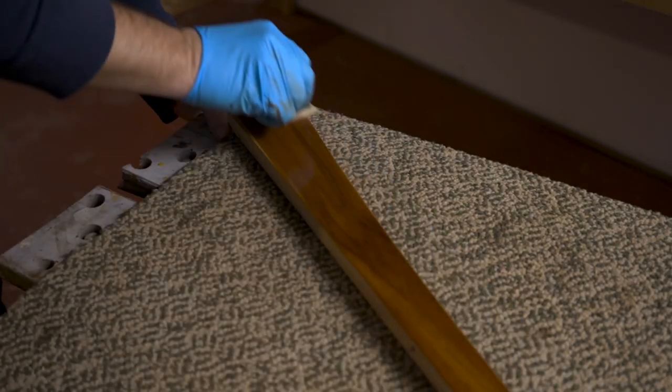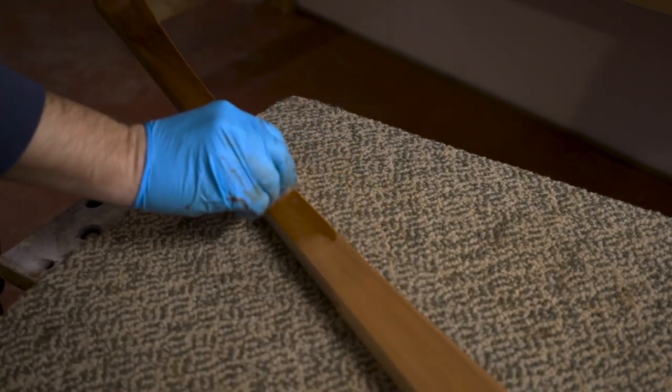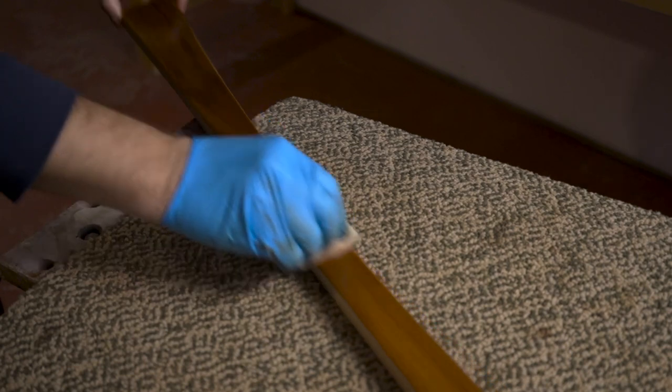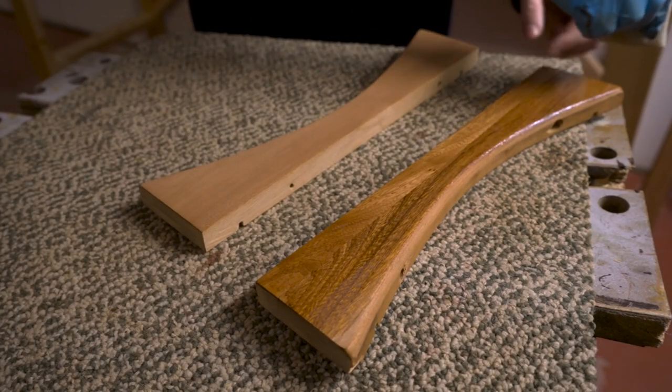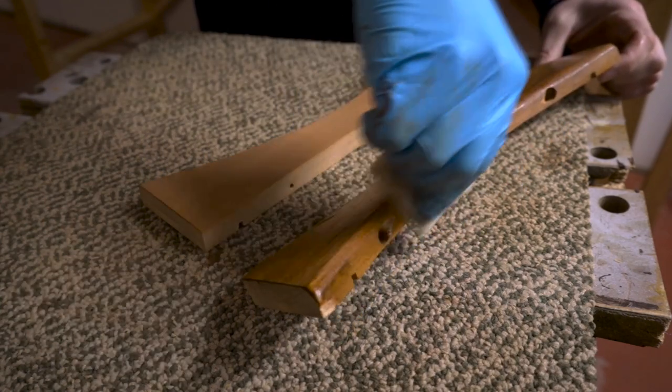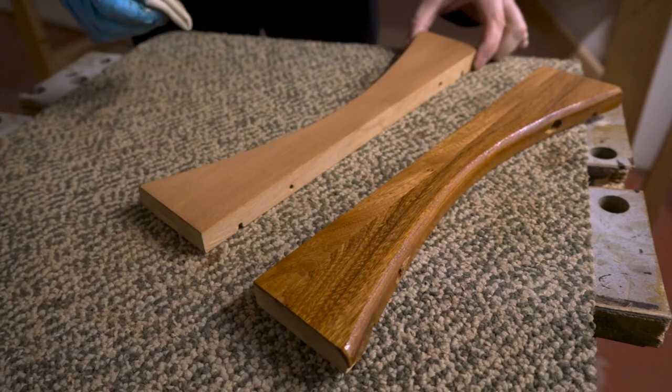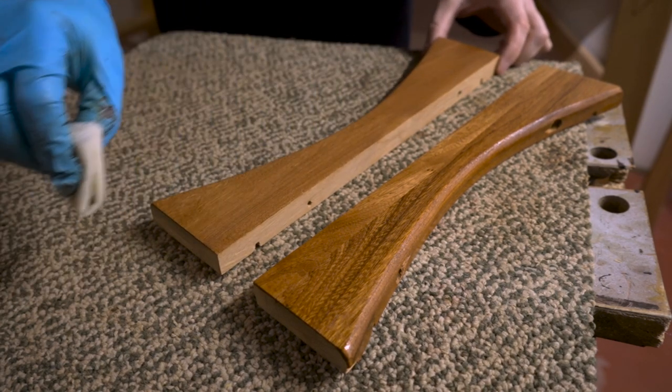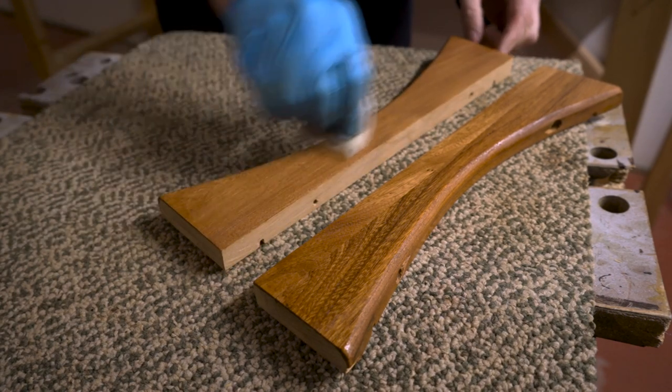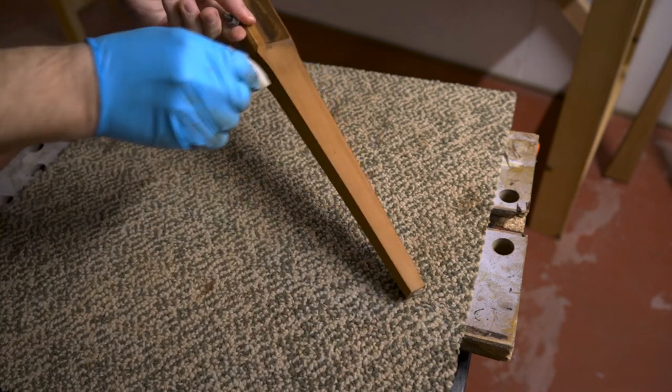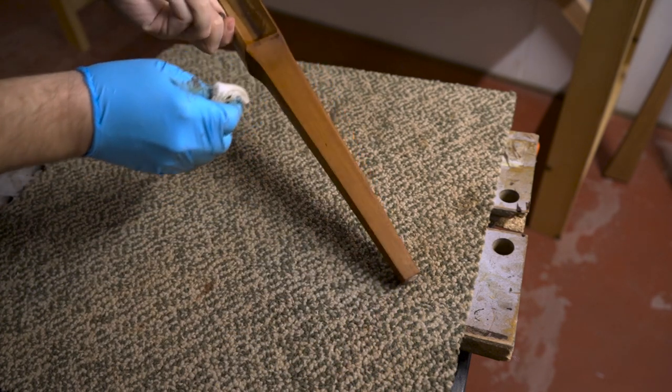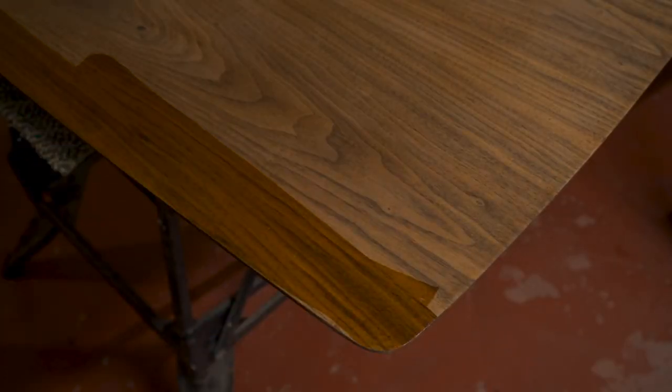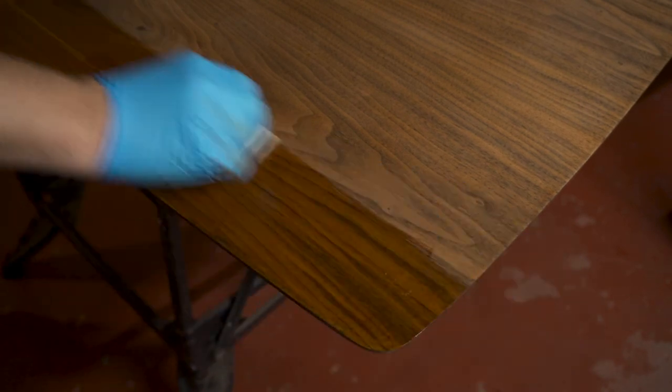Once the stain was dry, I could put on the top coat. In this case, I'm using an oil-based satin wipe-on polyurethane. I wiped on maybe three or four coats. Here I'm wiping it on the top, which didn't get any stain. So this is just the natural color of the veneer.